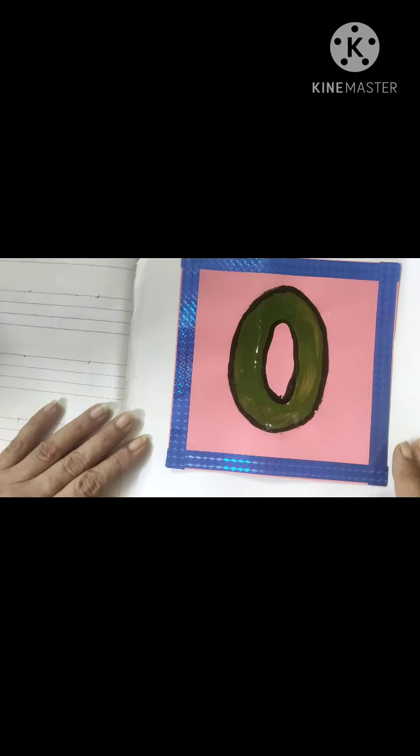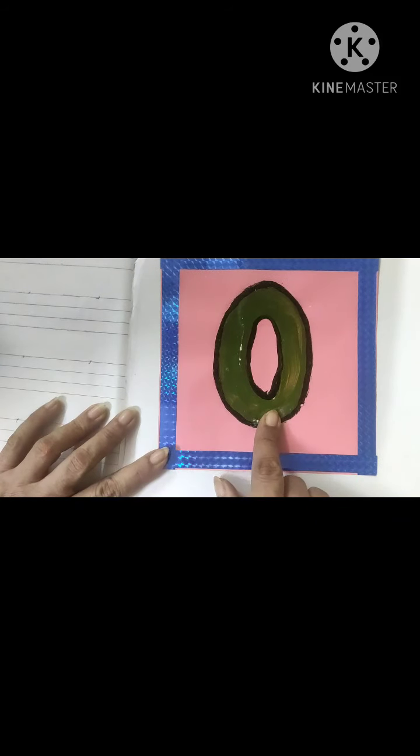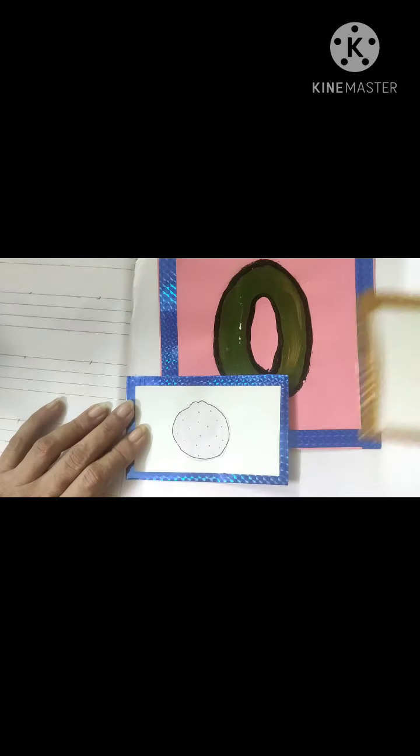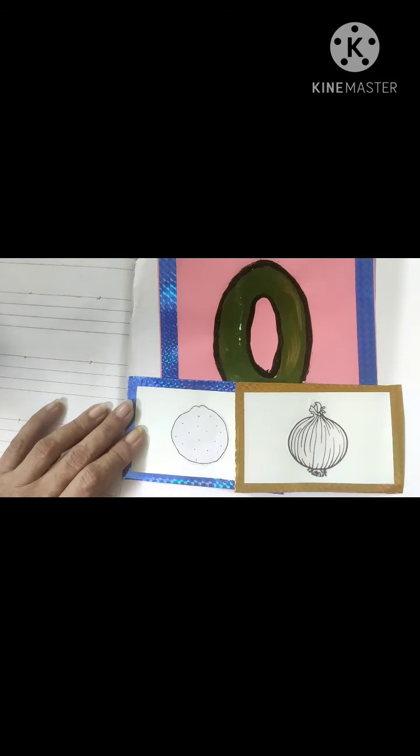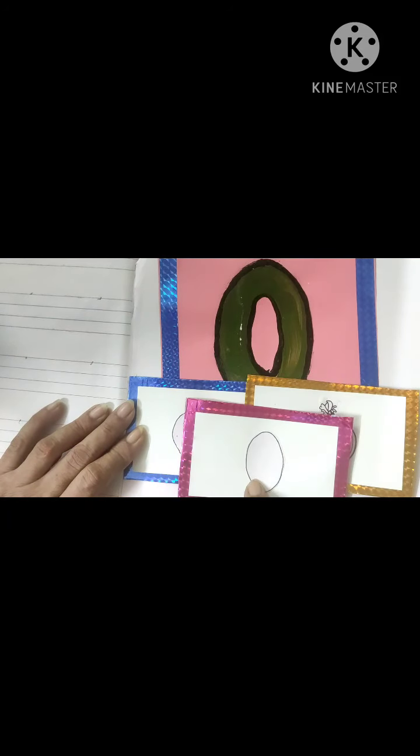Once again let us revise the phonics sound and the pictures. O says O. O orange. O onion. O oval. Okay. Now you are familiar with these pictures.